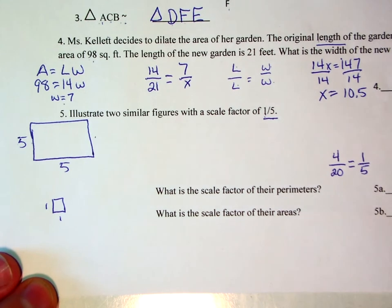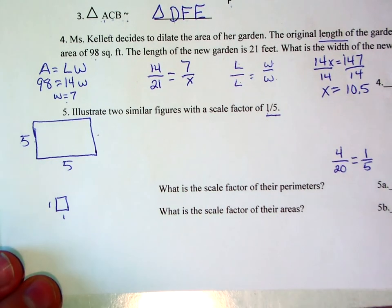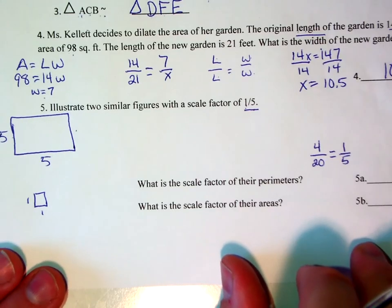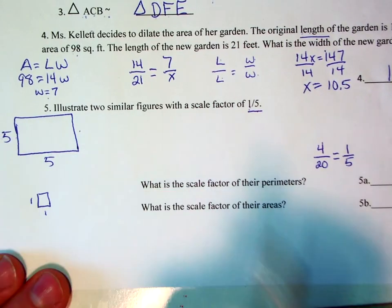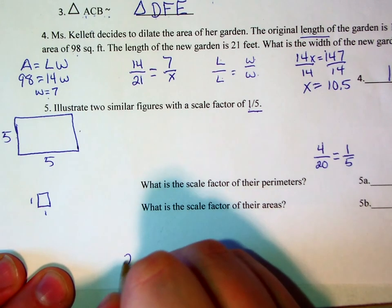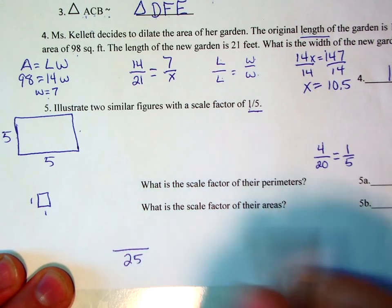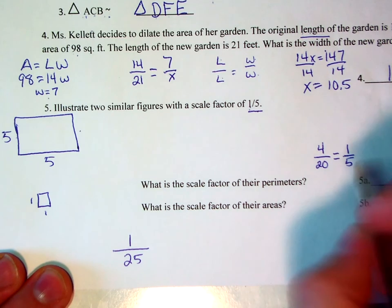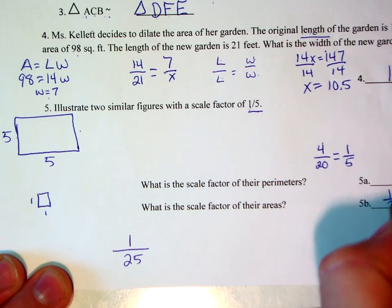Part B, what is the scale factor of their areas? Well, in order to accomplish that, we're going to figure out what their areas are. So on my big shape, 5 times 5 is 25. 1 times 1 is 1. Well, here we see that the area has a scale factor of 1 over 25.